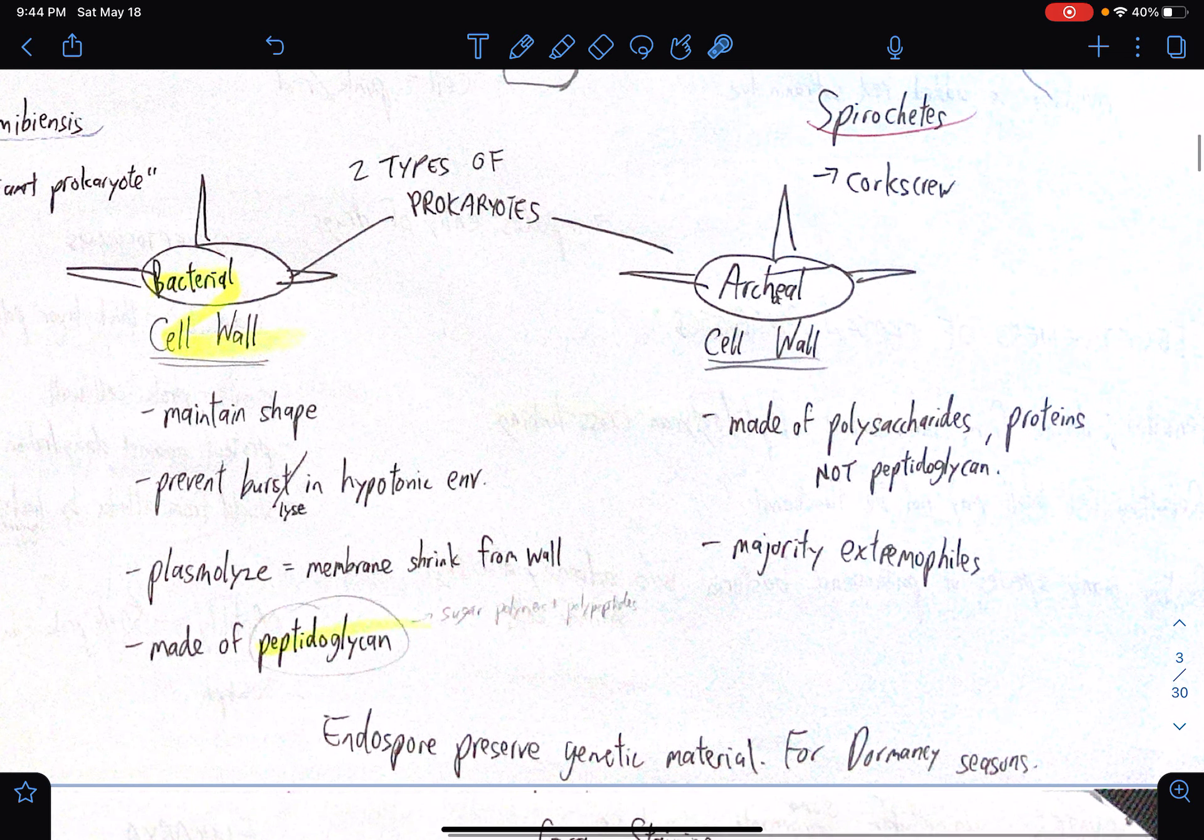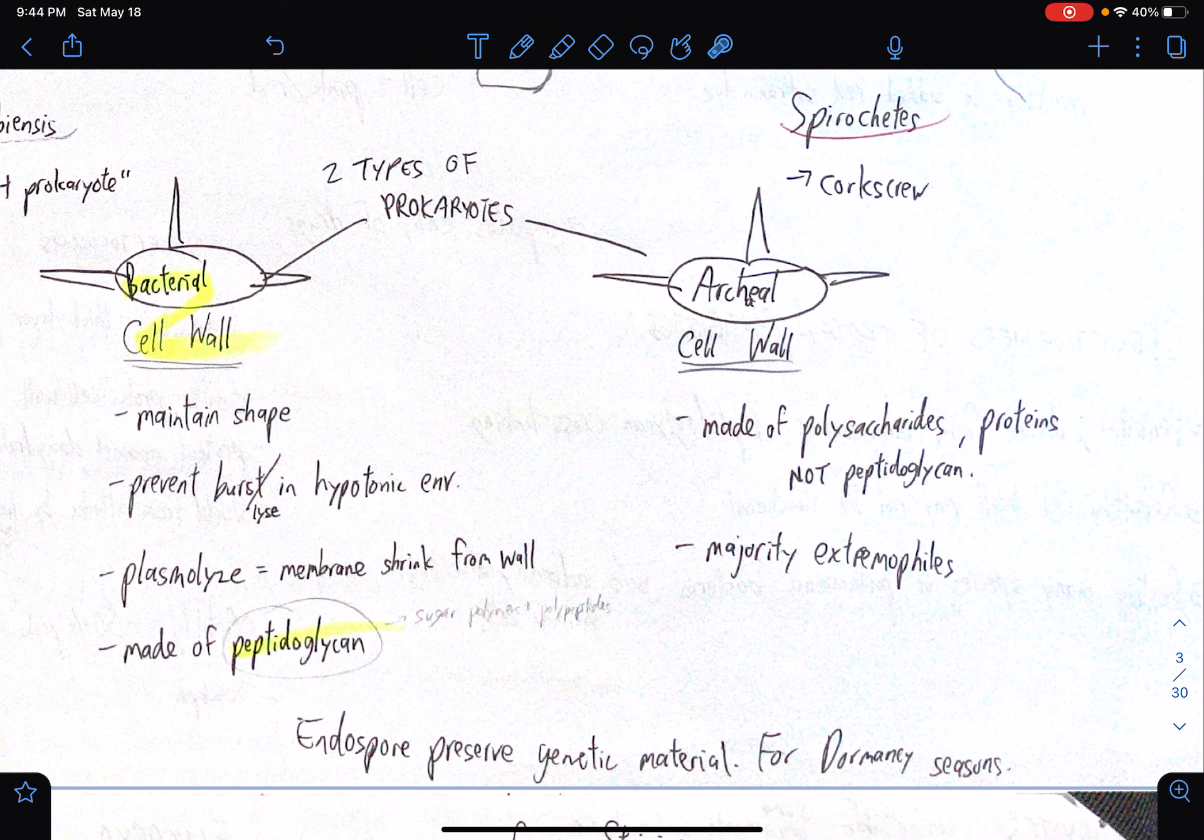How about the two types of prokaryotes? We have the bacterial cell wall and the archaeal cell wall. So for the bacterial cell wall, the shape is maintained. Prevent burst or lysis in a hypotonic environment. Ah yes. So the tendency, if there is too little solute and there's too much water, like what I said earlier in this video, there's a tendency for bursting or exploding or lysing. But then yes, the cell wall is able to prevent that kind of worst-case scenario under normal circumstances. And in the event of plasmolysis, if there is too much salt or solute but there's too little water at the same time, then the membrane will shrink from the wall. And yeah, this cell wall is made out of peptidoglycan.